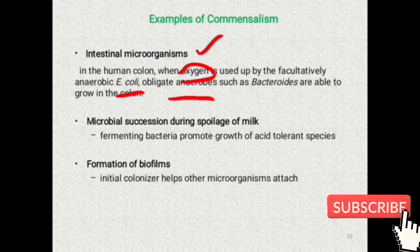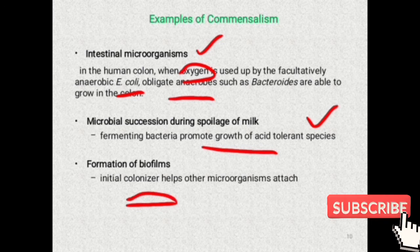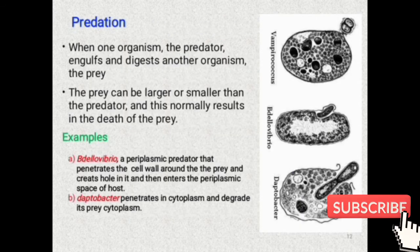Another example of commensalism is microbial succession during spoilage of milk. During milk spoilage, fermenting bacteria promote the growth of acid-tolerant species, as acid is formed during spoilage. Also, in biofilm formation, the first colonizer bacteria help other microorganisms to attach through the formation of slime.